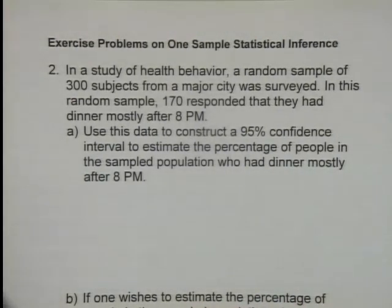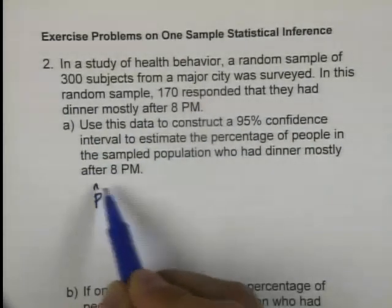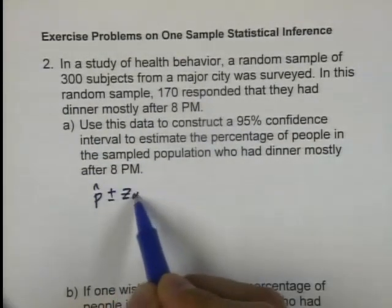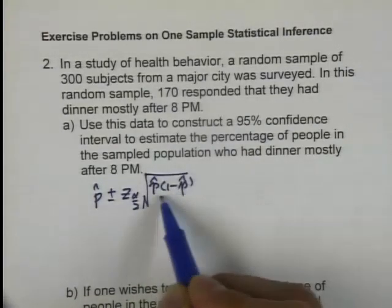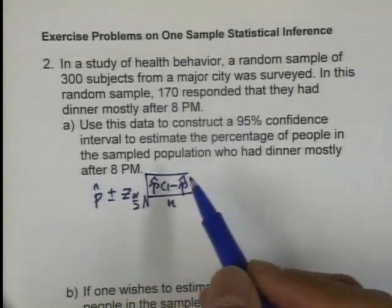Well, this is a confidence interval estimate for proportion. So you should use a formula that is for confidence interval estimate for proportion. That is actually a formula you use z-score. That's a formula, you can look up our notes.